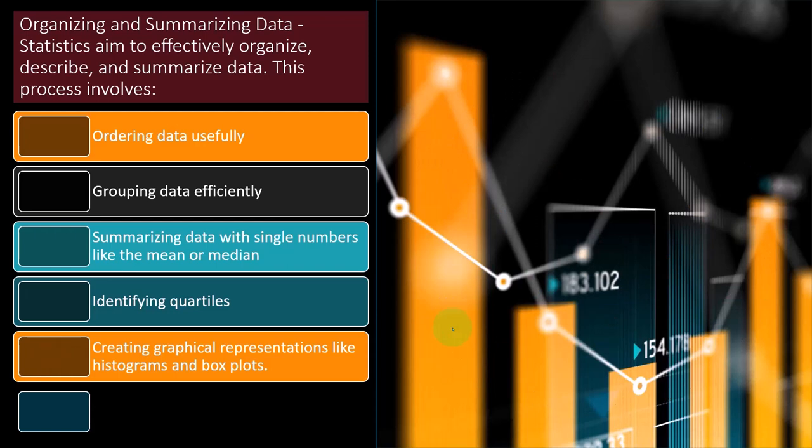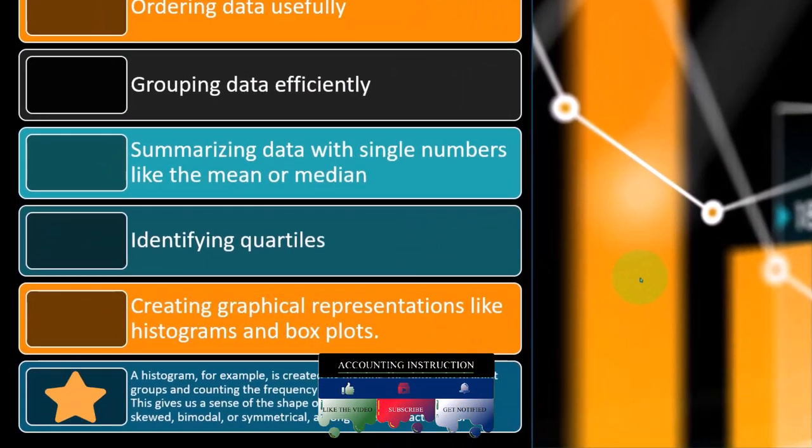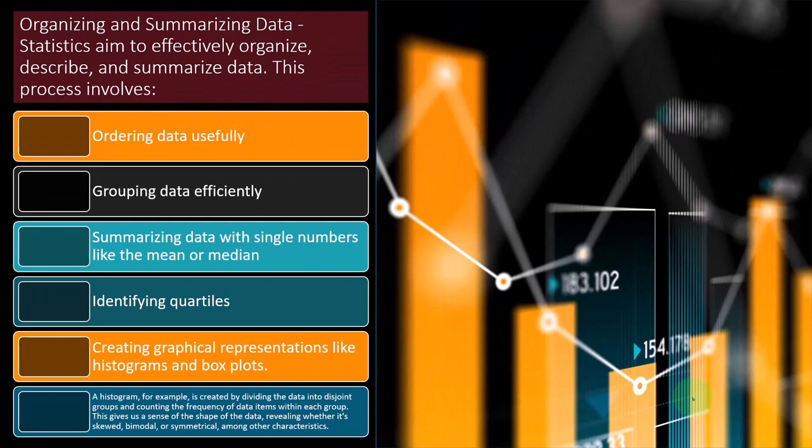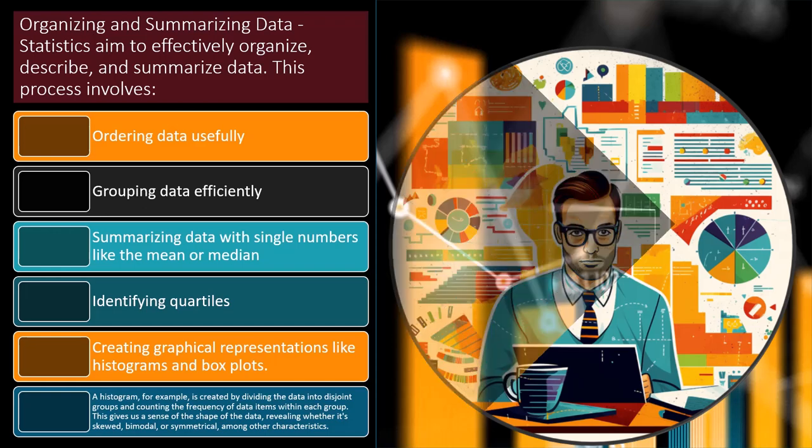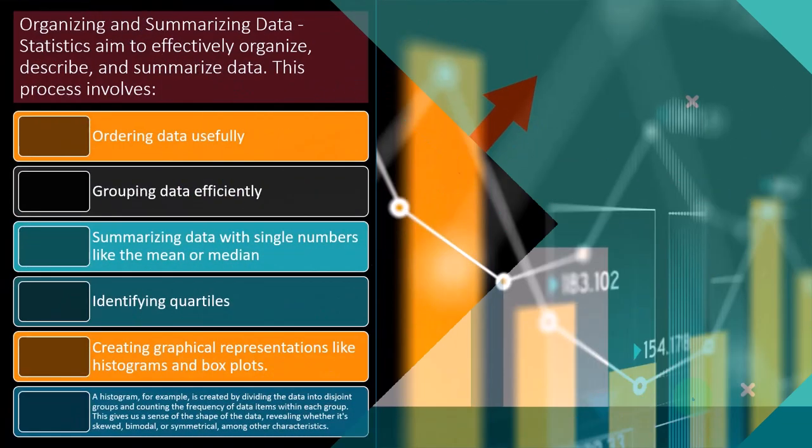So we'll make some of these in future presentations. Both of these are things that we can do in Excel, Excel being a great tool. So we'll show them in Excel as well as some other outside of Excel so we can see examples of box plots and histograms. The histogram is probably the big one that gives us a better just pictorial representation of the data. So a histogram, for example, is created by dividing the data into disjoint groups and counting the frequency of data items within each group. So this looks similar to a histogram. It looks kind of like a bar graph, but it's going to be a grouping of the data.